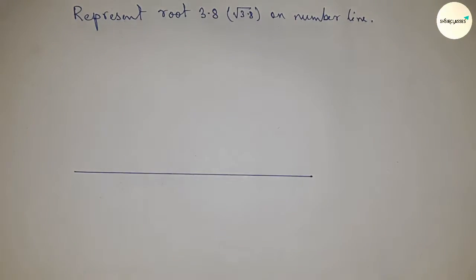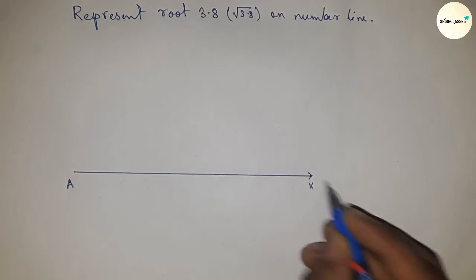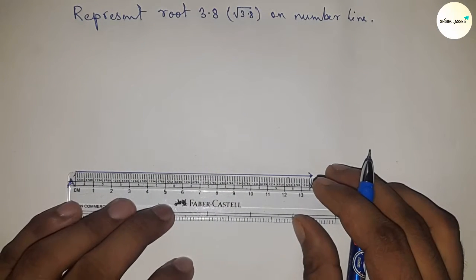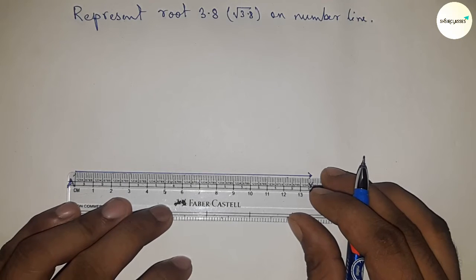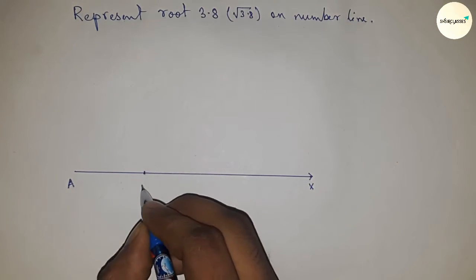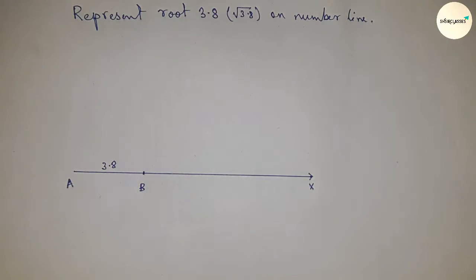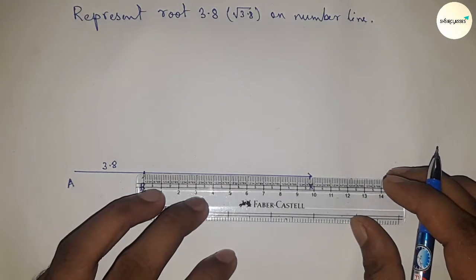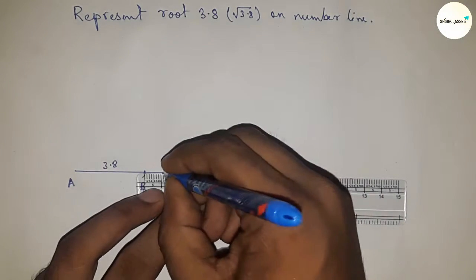First, draw a line of any length. This is the AX line. Next, take a length of 3.8 centimeters using a scale. So AB equals 3.8 centimeters.